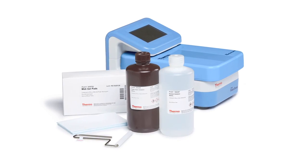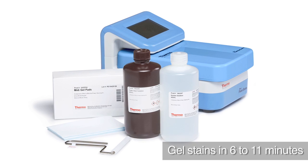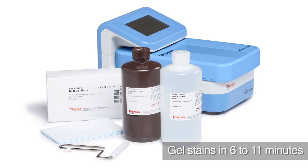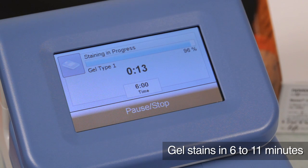When used with Thermoscientific Pierce Power Staining kits, the Pierce Power Stainer delivers similar performance in as few as 6 to 11 minutes when staining one to two mini gels or one mini gel.